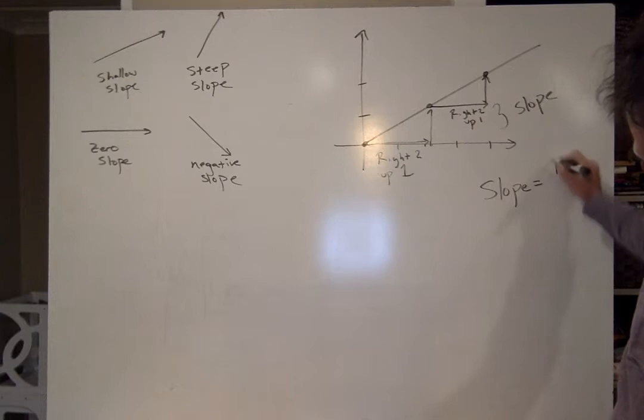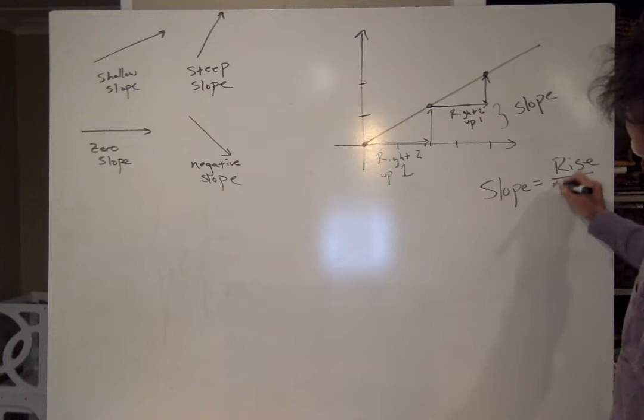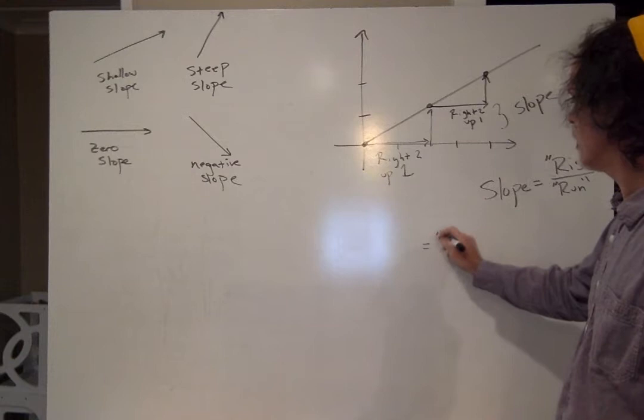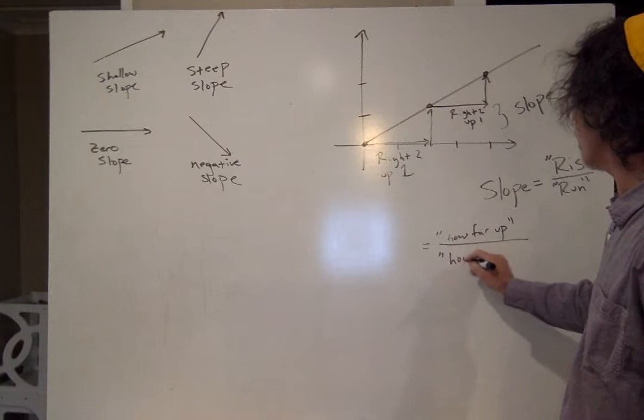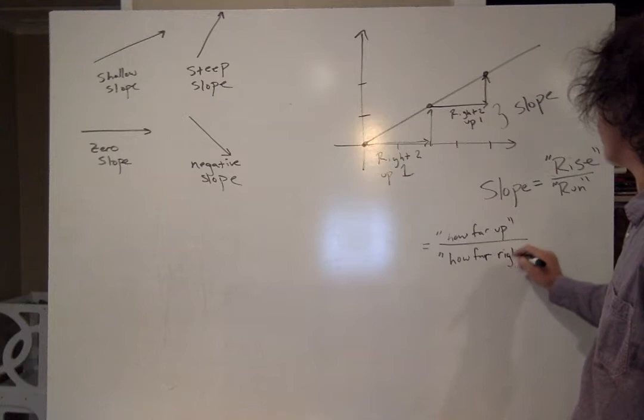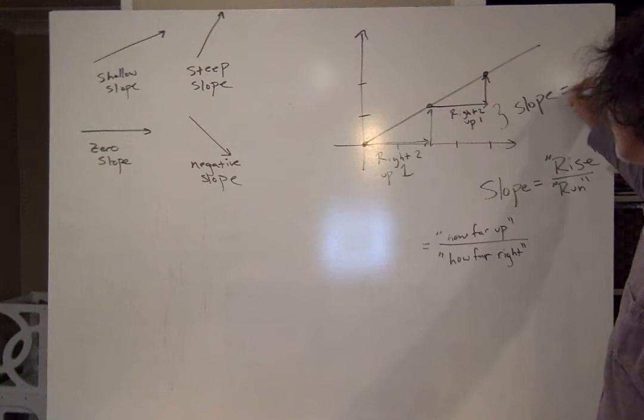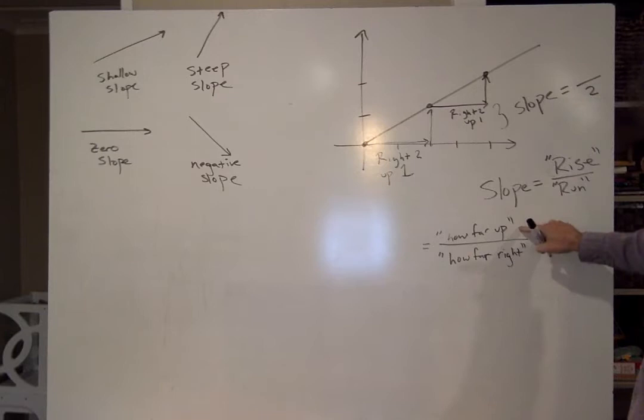And the slope they define as the rise over the run. Or, as I like to say, how far do you move up over how far do you move to the right? In our case, right here, the slope is how far you move to the right, which is on the bottom, that's 2, and how far up, 1. So the slope is 1 half.